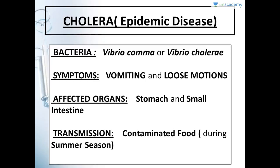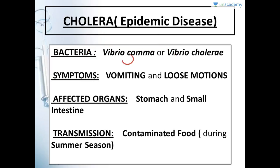Cholera is an epidemic disease — epidemic means a disease which spreads in a region. The bacteria for cholera is Vibrio comma or Vibrio cholerae. The bacteria is actually a comma shape, which is why it is called Vibrio comma.